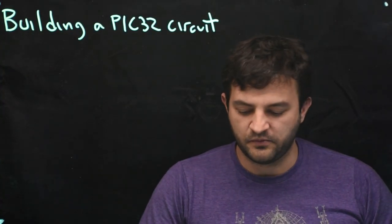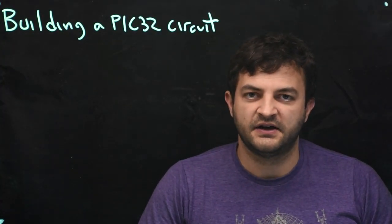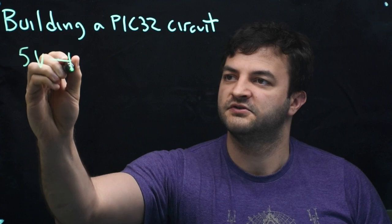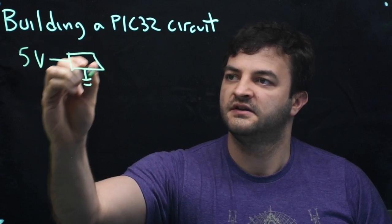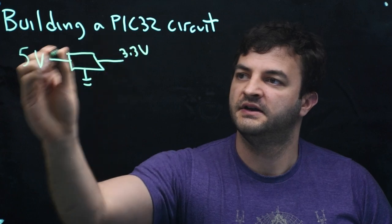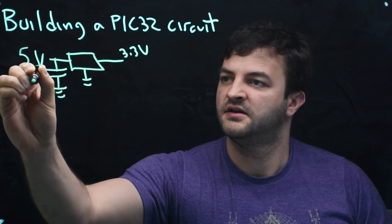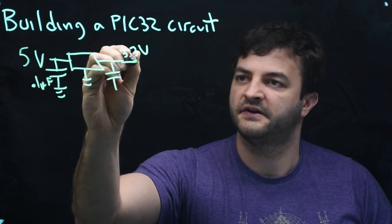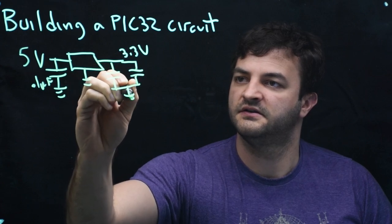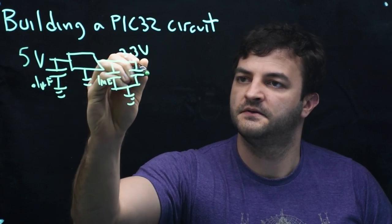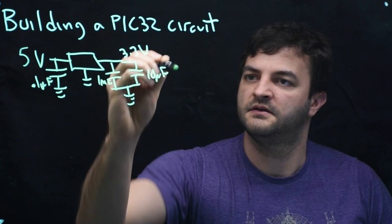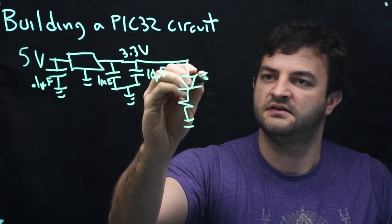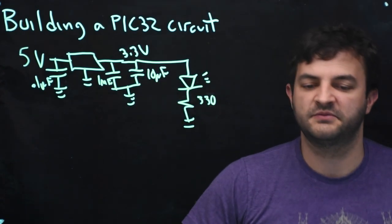So before you go building any circuit you should always build and draw the circuit diagram. So we already know that we have a 5 volt line going to our voltage regulator and that outputs 3.3 volts. And we put a 0.1 microfarad here and we put a 1 microfarad and a 10 microfarad over here. And then we had a red LED. So that's our circuit diagram so far.